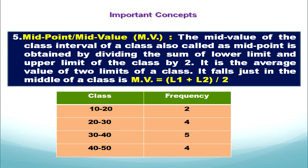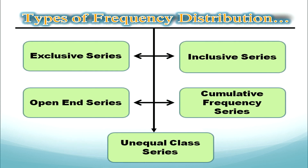We observe that the midvalue for the first class was 15 and for the next class was 25 — a gap of 10, which matches the class interval gap. So once we have calculated the first midpoint, if the series is exclusive, we can easily determine the next midvalues: 15, 25, 35, 45, and so on.